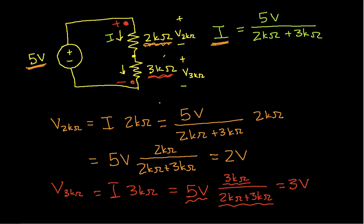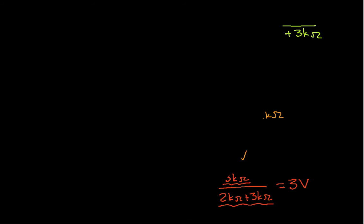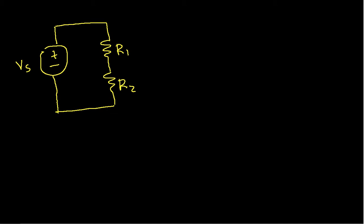So if we want to generalize this, if we have two resistors that are in series, we'll call this R1 and R2, and they have a voltage across them of, say, V sub s volts, then the voltage across R1, which I'll call V1, V1 is R1 over R1 plus R2 times the source voltage, that is the voltage from here to here.